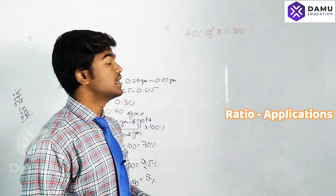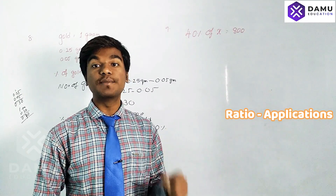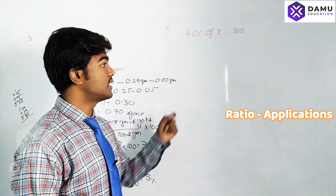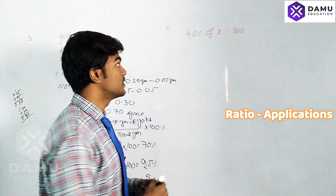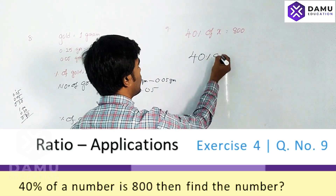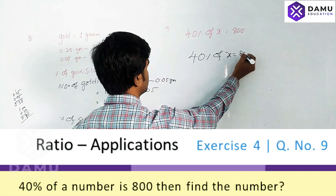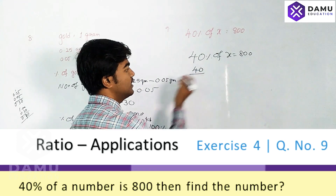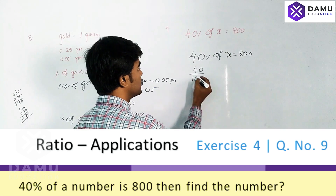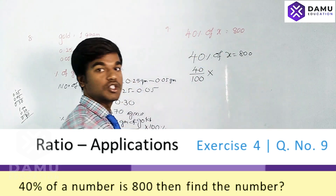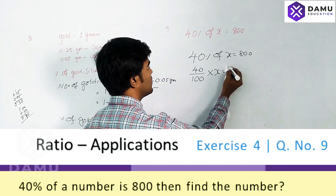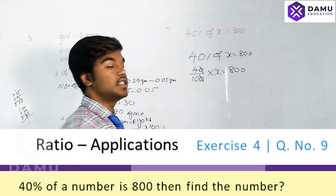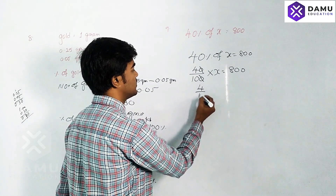Our next question is the ninth one. A number is given: 40% of a number is equal to 800. Let that number be x. So 40% of x equals 800. That means 40 divided by 100, multiplied by x equals 800.